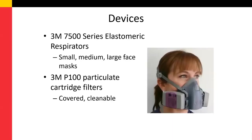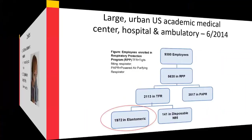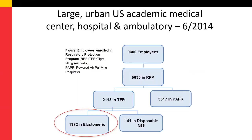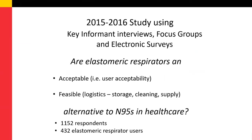The 3M 7500 series elastomeric respirator was used, which comes in three different size face masks, as well as the 3M P100 particulate cartridge-covered filters, which are cleanable. As of the summer of 2014, the downtown Baltimore campus had over 2,000 workers wearing tight-fitting respirators, the majority of whom were using elastomeric respirators. This provided a great opportunity to understand some research questions in this population.